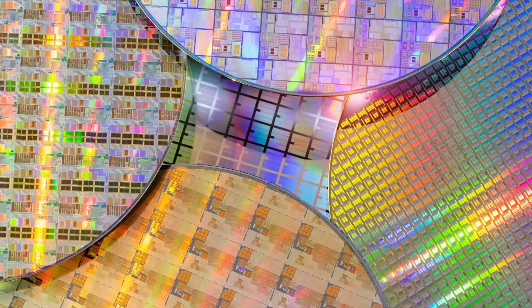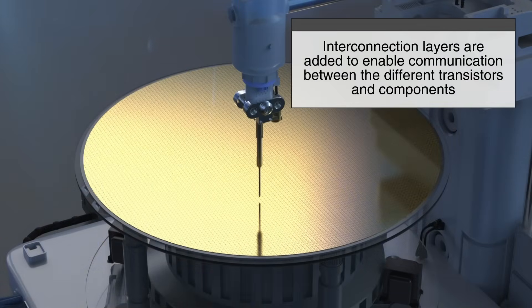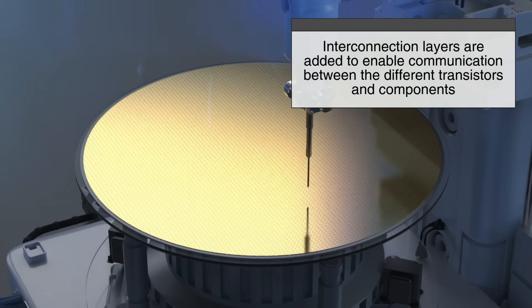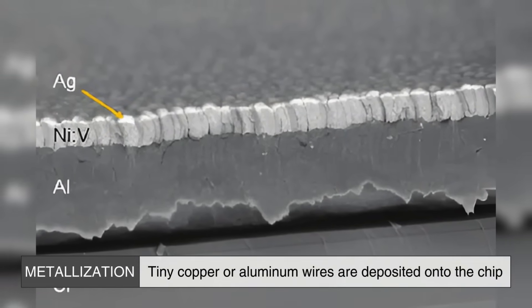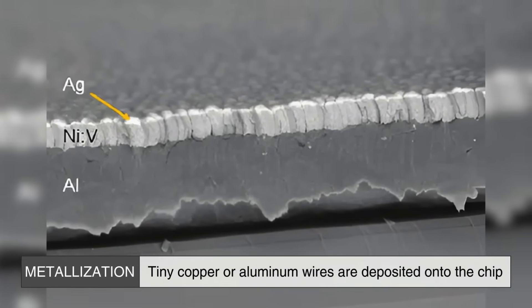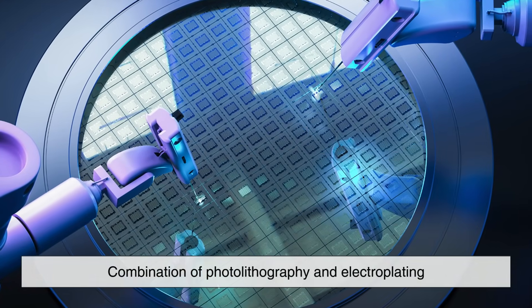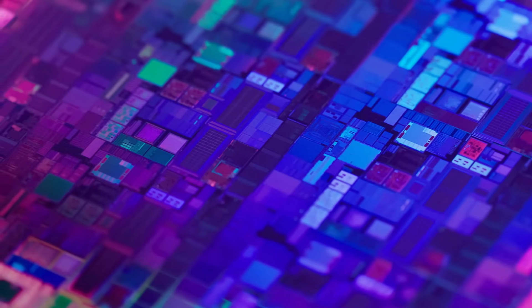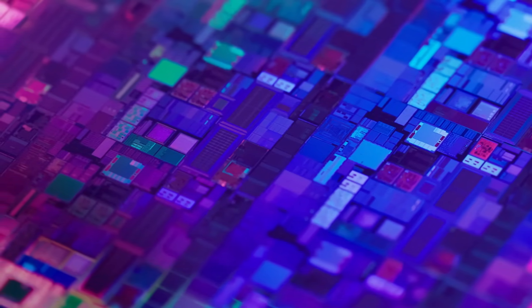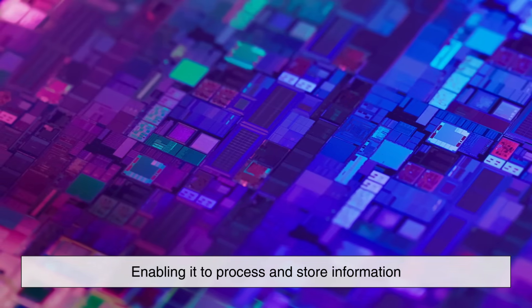As the semiconductor chip nears completion, interconnection layers are added to enable communication between the different transistors and components. This is done using a process called metallization, where tiny copper or aluminum wires are deposited onto the chip using a combination of photolithography and electroplating. These interconnections form the pathways that allow electrical signals to travel through the chip, enabling it to process and store information.